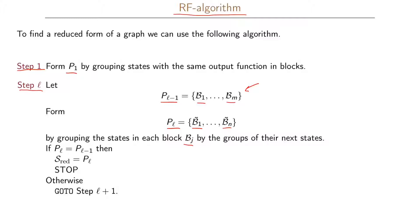We do this iteratively until Pl equals P(l-1). When that condition holds, our reduced set of states is Pl and we can stop — we have found the reduced form of the graph. Otherwise, if Pl is not equal to P(l-1), we go to the next step denoted l+1. Performing this algorithm will always give us the reduced set of states from which we can find the reduced form of the state transition graph.